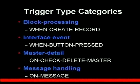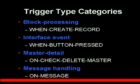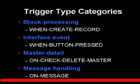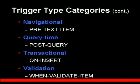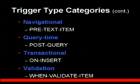The trigger type categories include block processing — like when creating a new record — and interface events, such as when the user clicks a button, which requires a when-button-pressed trigger to handle the code that fires. Then there are master-detail triggers, message handling, and navigational triggers, which fire as the user navigates with a tab button or moves from one item to the next.